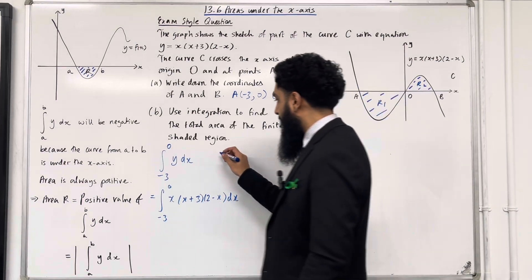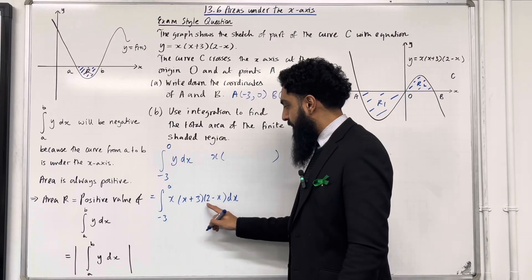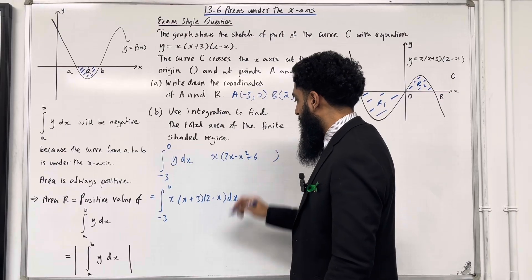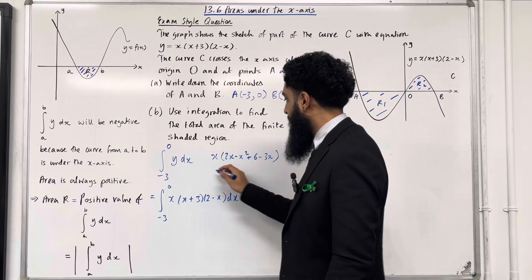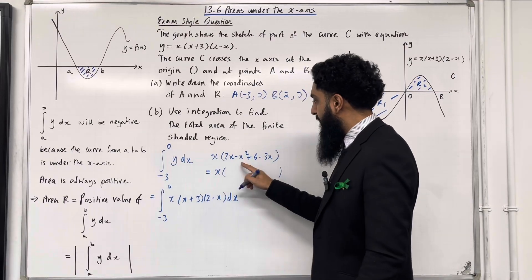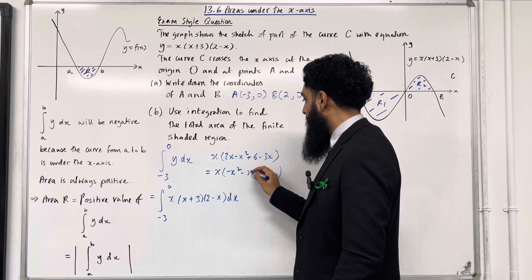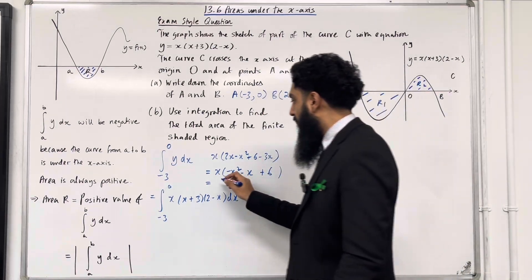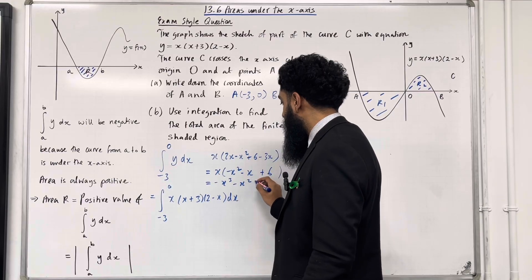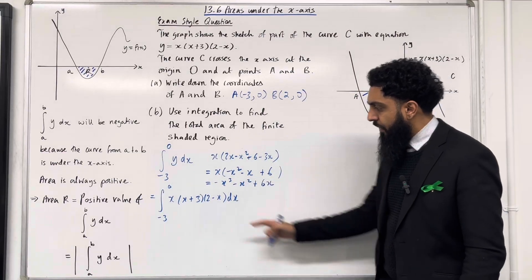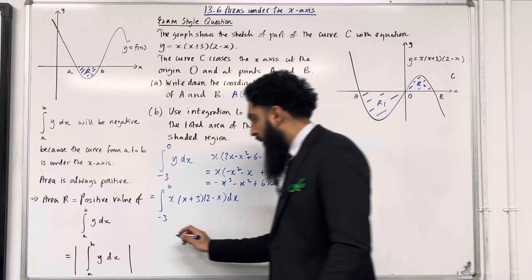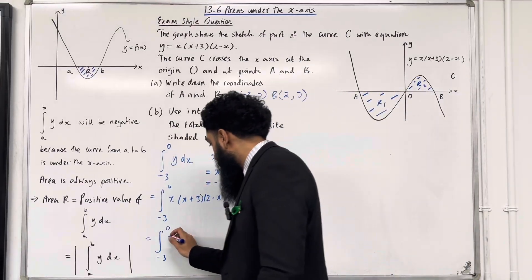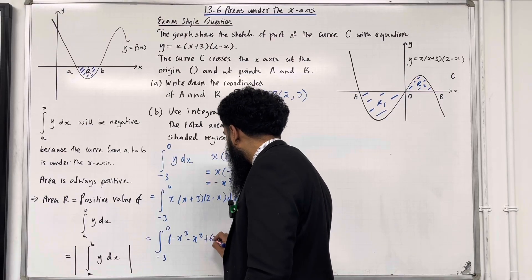Let's expand the brackets. x times 2 is 2x, x times minus x is minus x squared, 3 times 2 is 6, and 3 times minus x is minus 3x. So we've got minus x squared, and 2x minus 3x is minus x plus 6. Expanding with x gives minus x cubed, minus x squared, plus 6x. So we are integrating from minus 3 to 0 of the cubic: minus x cubed minus x squared plus 6x, dx.